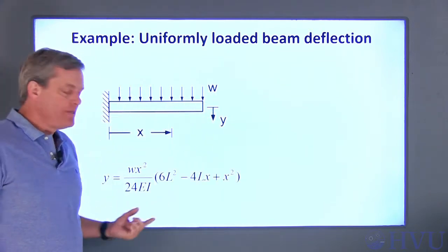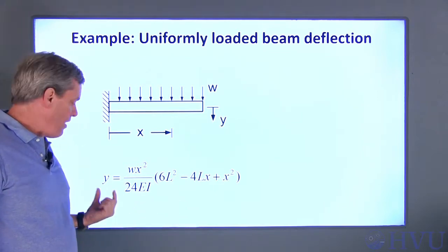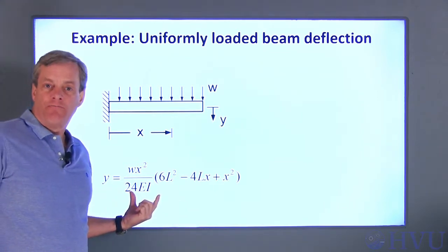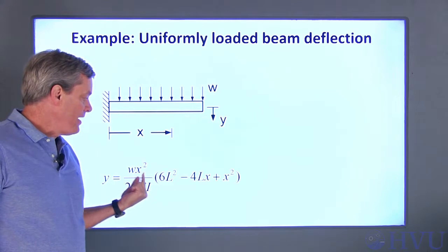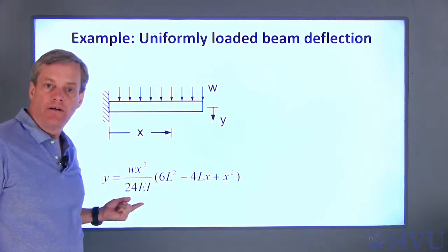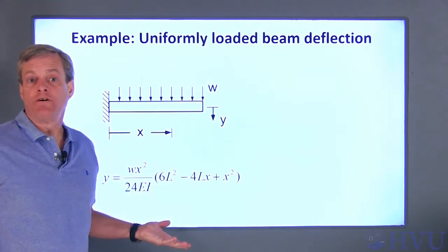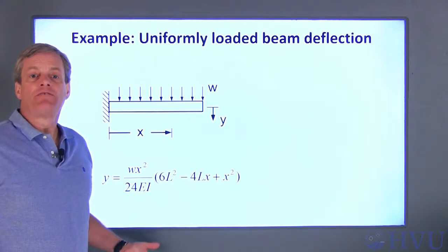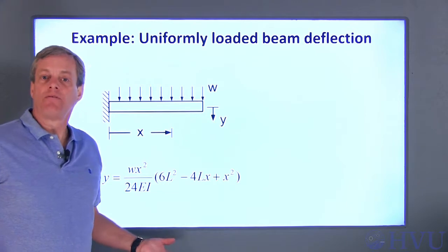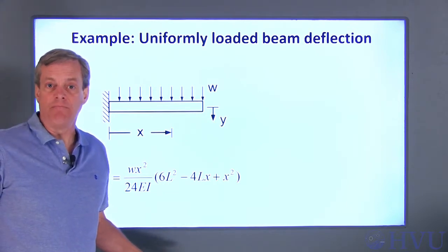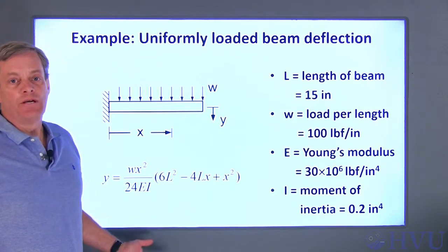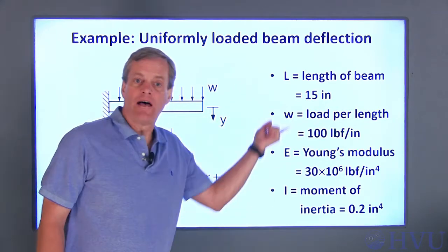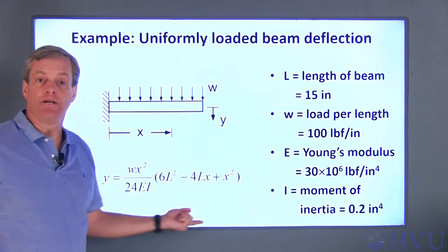The equation that describes the vertical deflection, Y, as a function of the distance from the fixed end of the beam, X, is shown here. This equation is, of course, a function of position along the beam, X, and is also a function of the Young's modulus, E, and the moment of inertia, I, of the beam. For the problem that I'm doing, these are the numerical values for the variables in this equation.